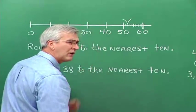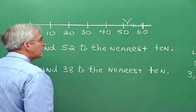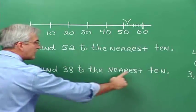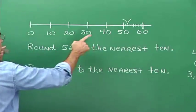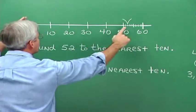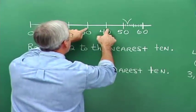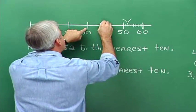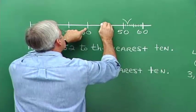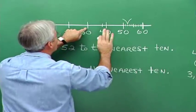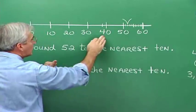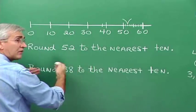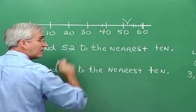In a similar way, if we want to round 38 to the nearest 10: here's 30, here's 40. 38 would be roughly right about here, and it looks like it's closer to 40 than it is to 30. Therefore, we say to the nearest 10, 38 is 40.